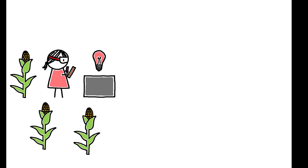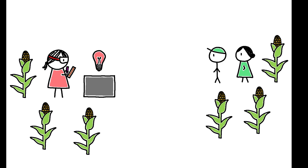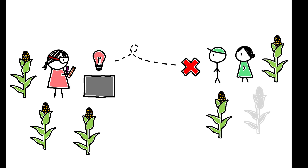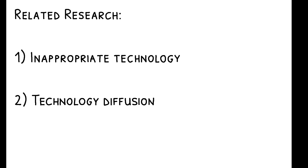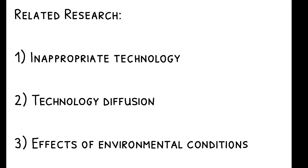In conclusion, this paper shows how inappropriateness shapes technology diffusion and global production. As the geography of innovation and ecology continue to change, understanding how these dynamics will evolve is an important area for future research. To read more on this topic, you can check out the paper's references to other related work, including research on the inappropriate technology hypothesis, the determinants of technology diffusion, and the effects of environmental conditions on economic development.